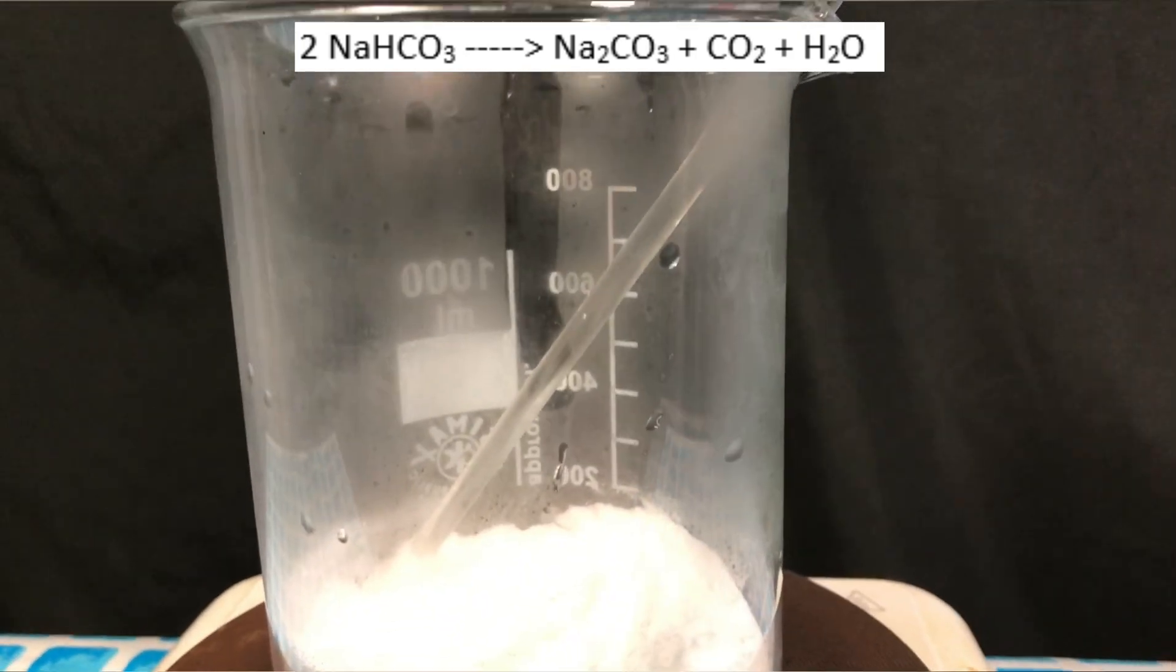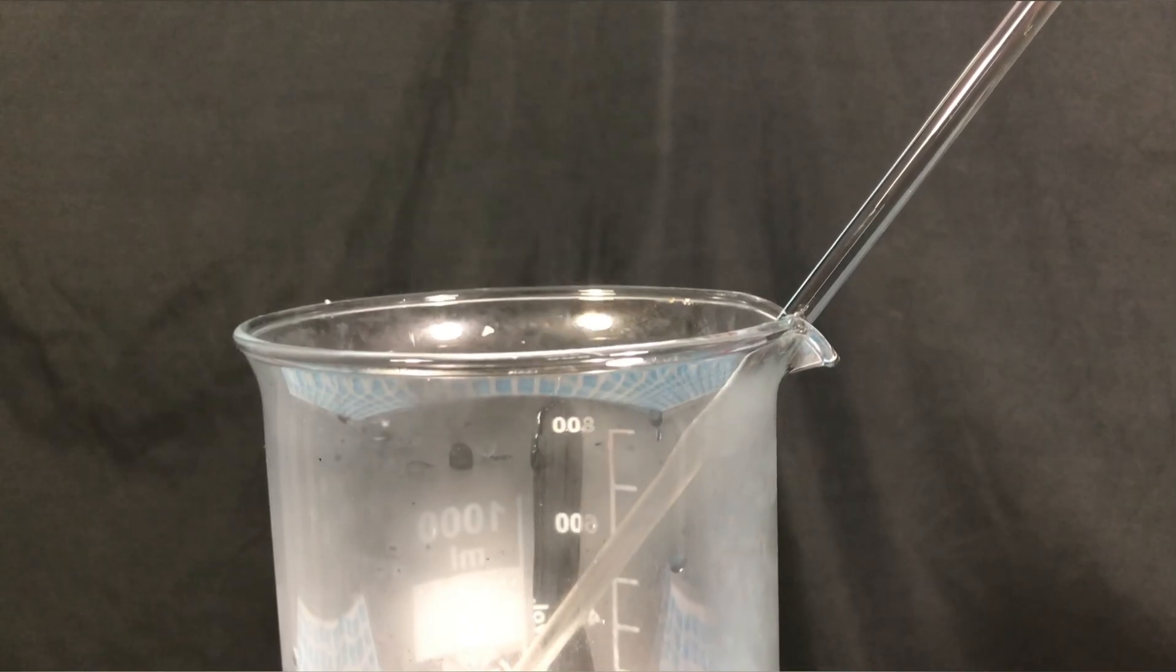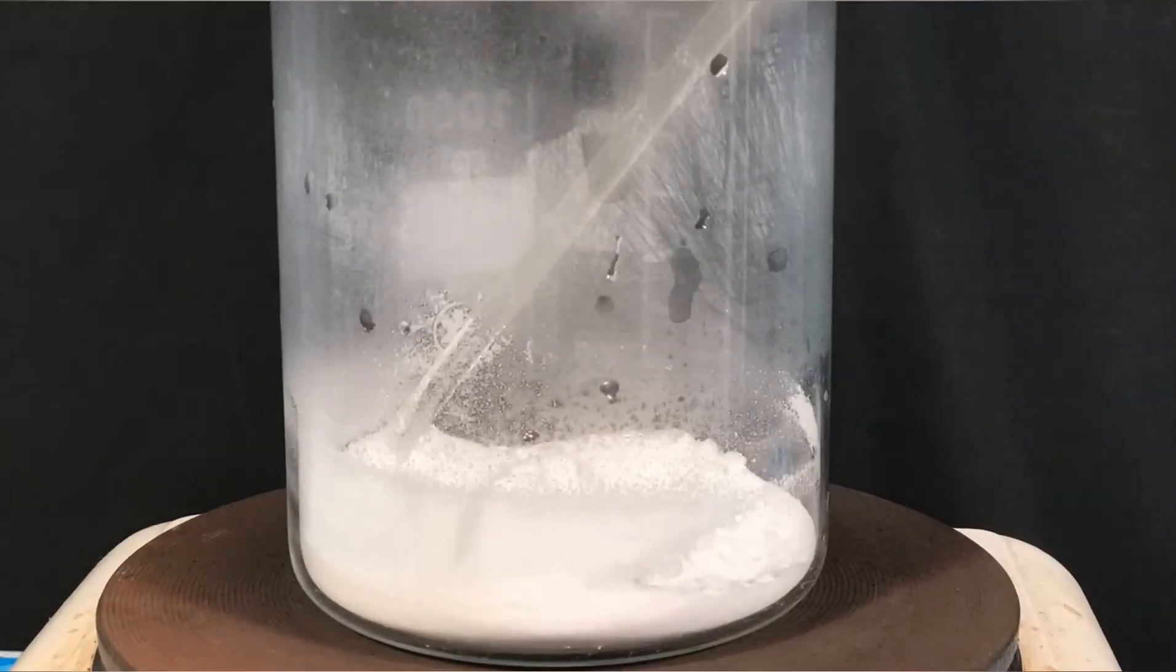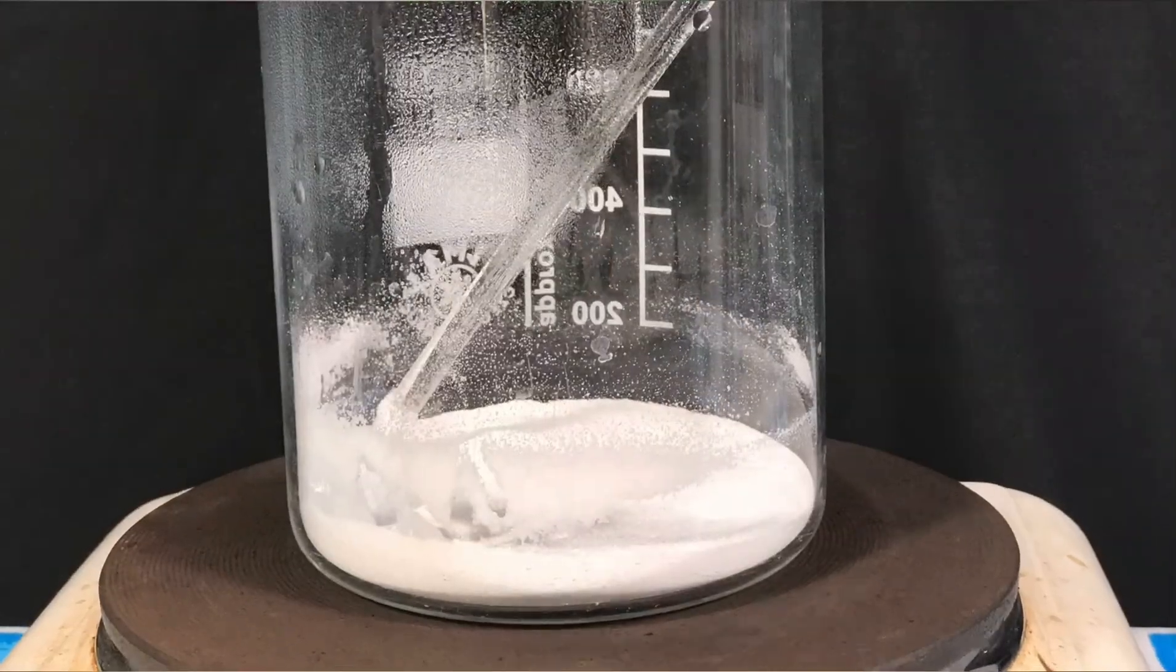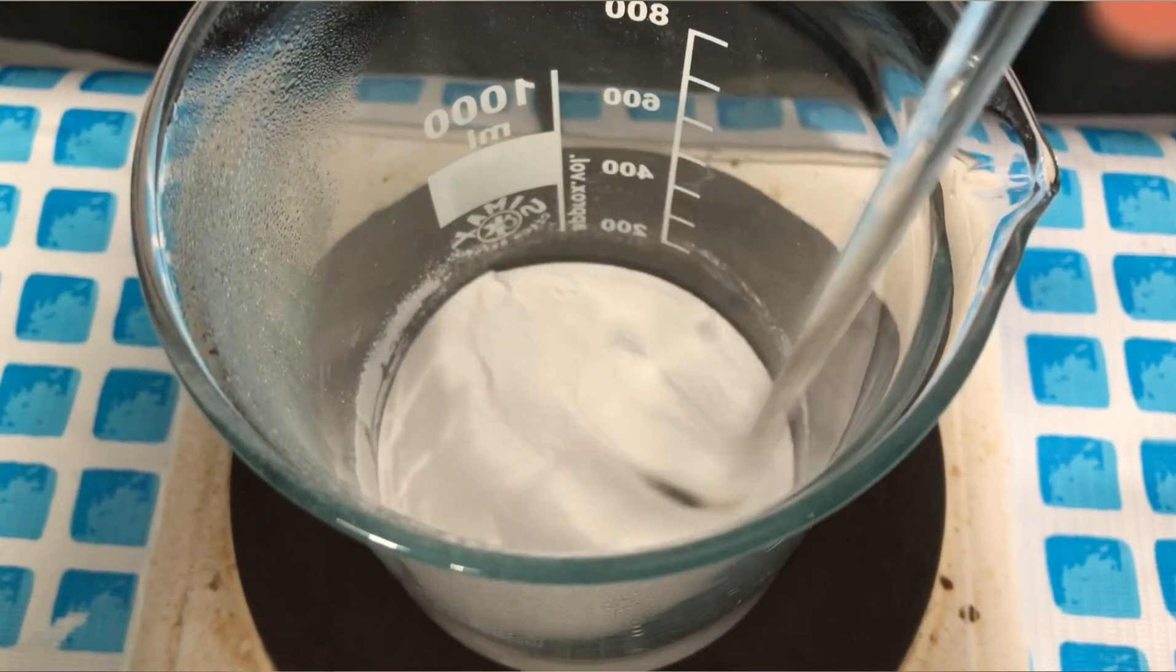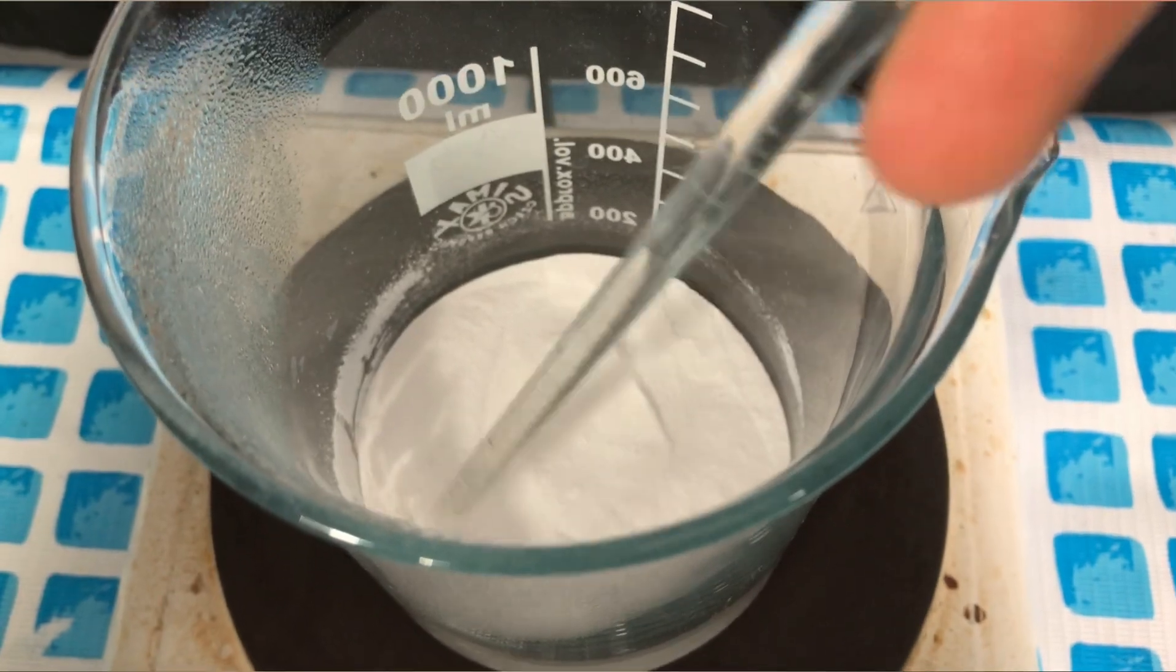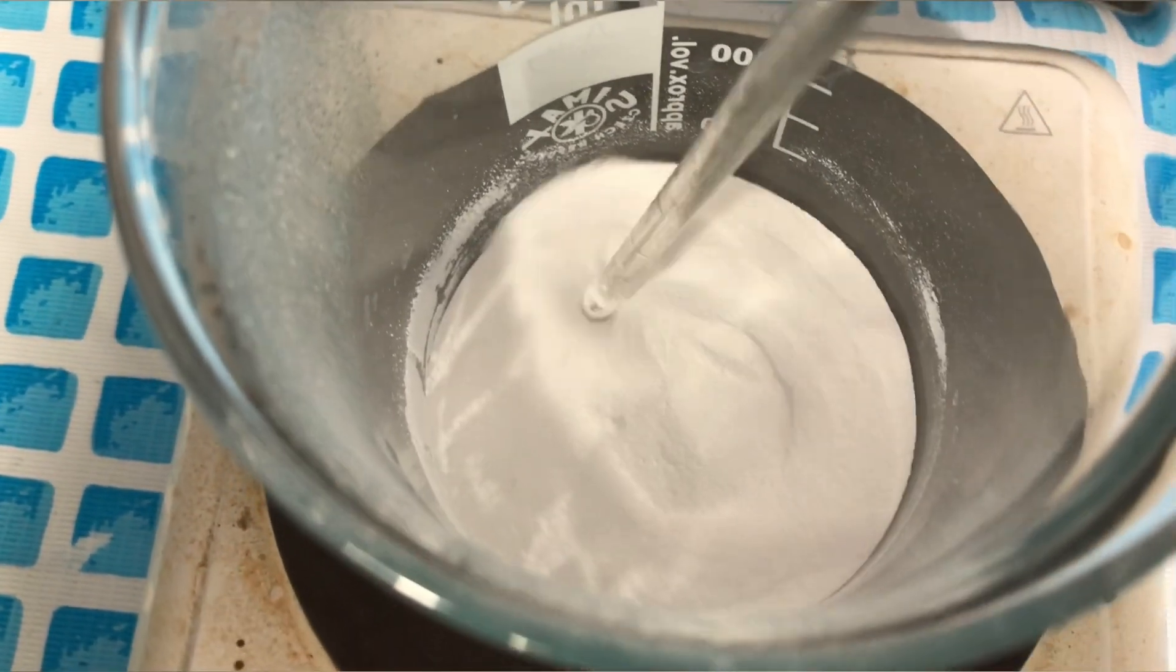Some water vapors start to condense at the cold walls of the beaker. The sodium bicarbonate was occasionally stirred to make sure that even unreacted sodium bicarbonate gets to the hotter bottom of the beaker, reacting and turning into carbon dioxide, sodium carbonate and water.